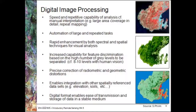Digital image processing allows us to automate large and repeated tasks, giving us robust means to perform tasks repetitively and get the same answer. We can create rapid enhancements using both spectral and spatial techniques, enhancing our visual analysis of data sets and providing increased capability for feature discrimination. If we look at an image ourselves, we can only discriminate between about 8 to 10 levels of grey, whereas a computer system can distinguish between individual pixel values — for example, differentiating a pixel value of 50% from 51%, which our eyes cannot do.